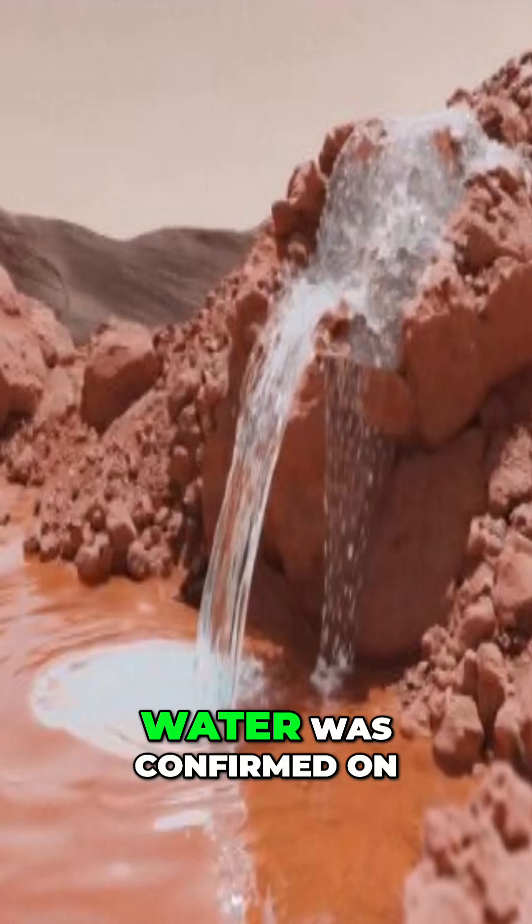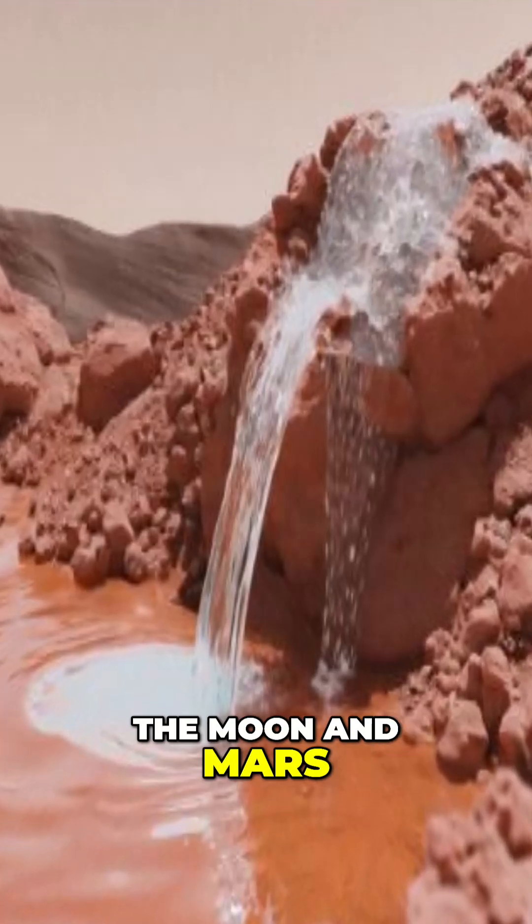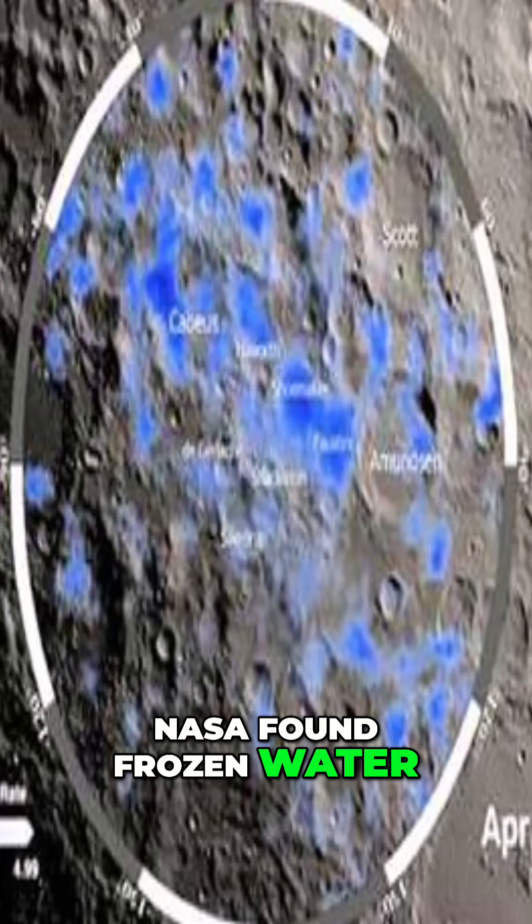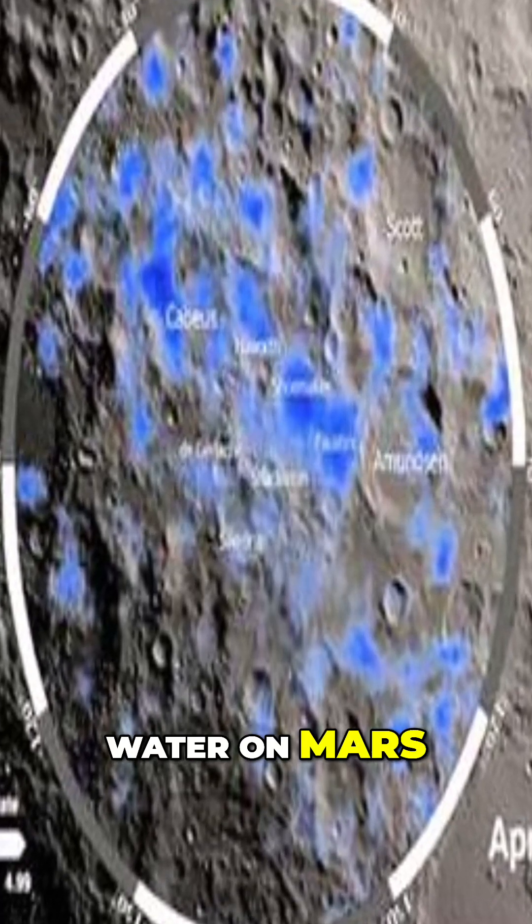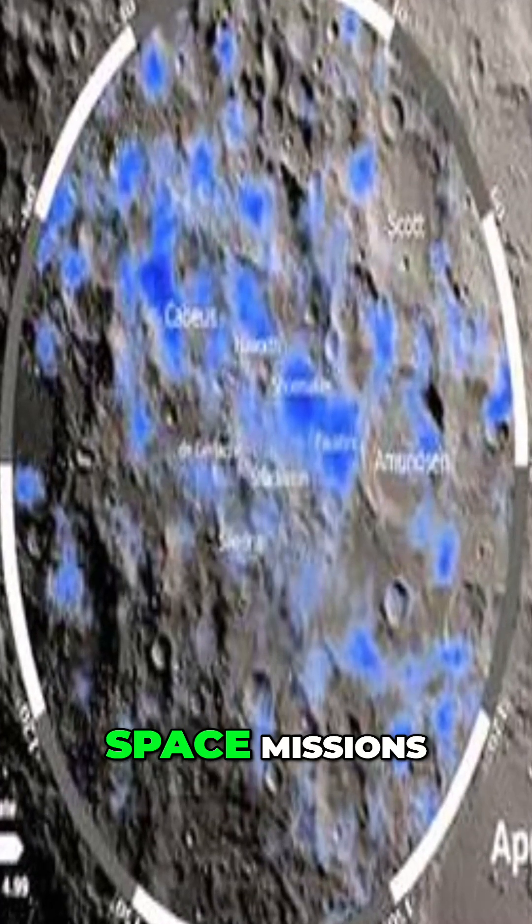7. Water was confirmed on the moon and Mars. NASA found frozen water on the moon and evidence of salty liquid water on Mars. Game changers for future space missions.